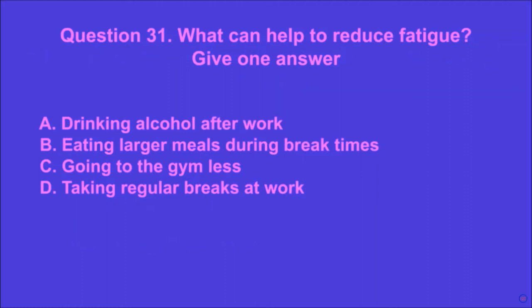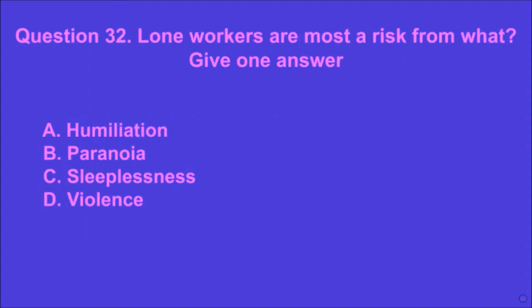Question 31: What can help to reduce fatigue? Give one answer. A: drinking alcohol after work, B: eating larger meals during break times, C: going to the gym less, D: taking regular breaks at work. D is the correct answer. Question 32: Lone workers are most at risk from what? Give one answer. A: humiliation, B: paranoia, C: sleeplessness, D: violence. D is the correct answer.